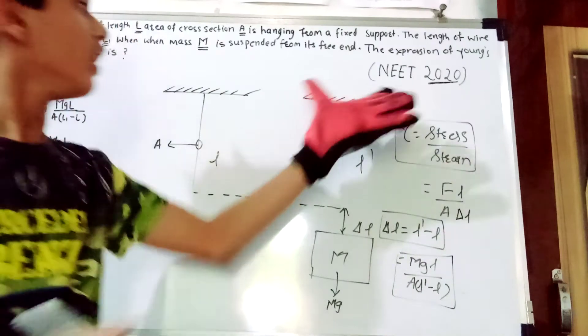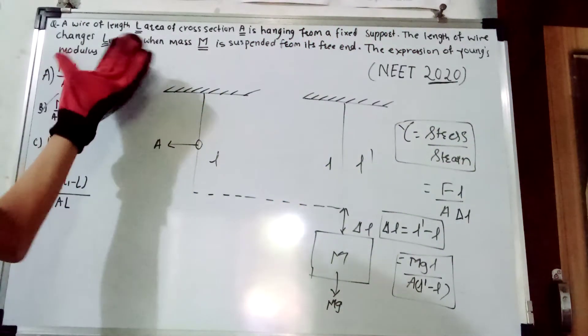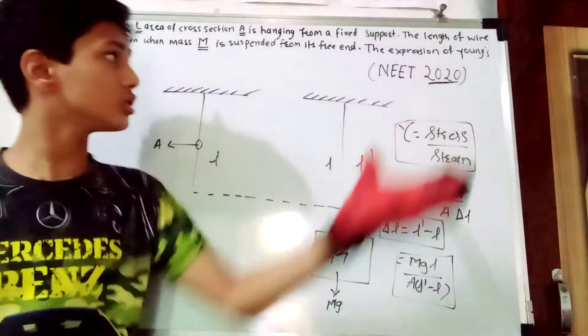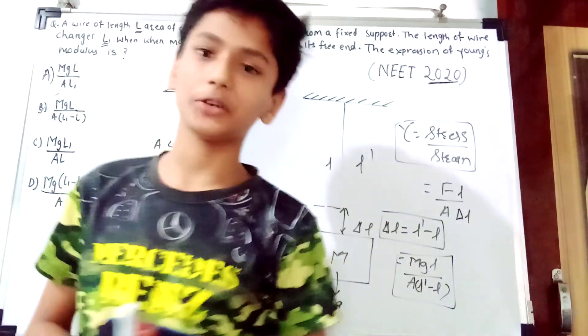So we have studied what Young's modulus is, and the expression is MgL upon A times L' minus L. This question is from NEET 2020 previous exam. Thank you.